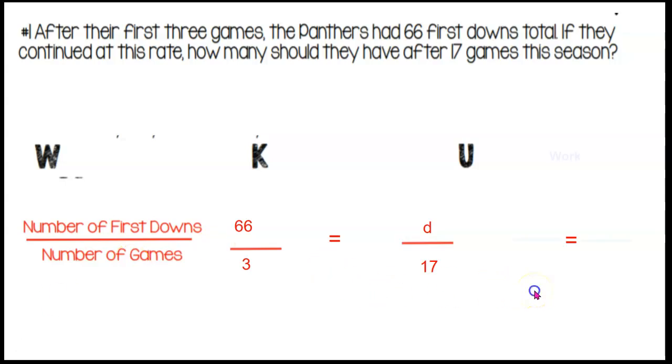All right, let's look for a relationship. Remember we have sixty-six first downs over three games and D over seventeen. Well, it was kind of difficult to see a relationship between three and seventeen, but I do see a relationship here between three and sixty-six. I know that if I multiplied three times twenty-two, I would end up with sixty-six. So I can use that same multiplication to figure out what D is representing. Seventeen times twenty-two is going to give me three hundred seventy-four. Therefore, D is equal to three hundred seventy-four first downs.